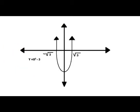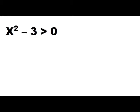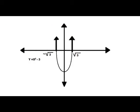Let's keep on going. We're going to solve for x squared minus three greater than zero. That's really easy — you can just go ahead and shade everything above the zeros.